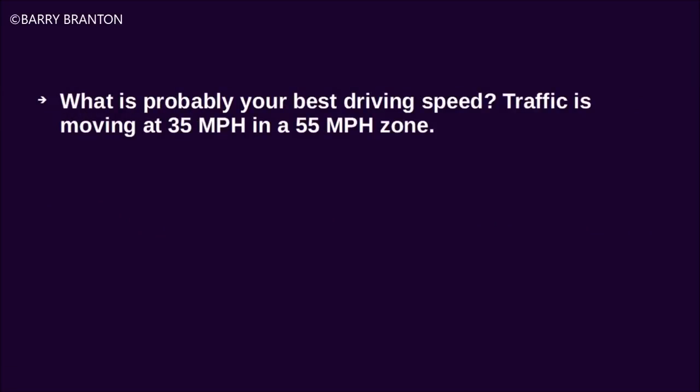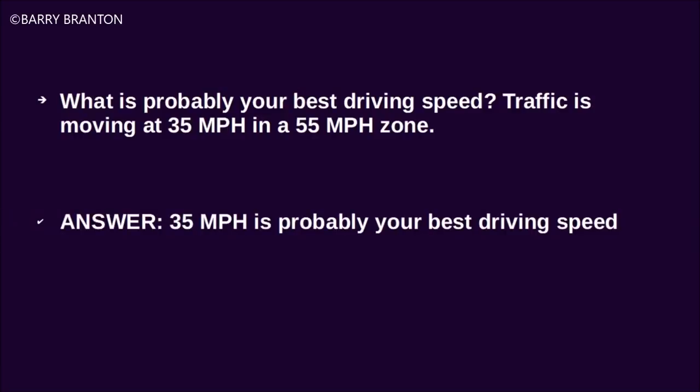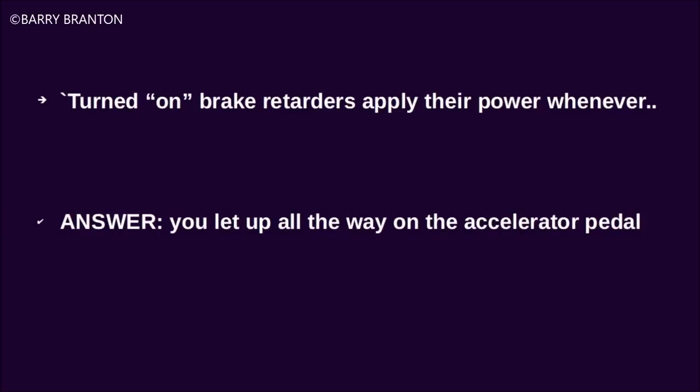What is probably your best driving speed when traffic is moving at 35 miles per hour in a 55 mile per hour zone? 35 miles per hour is probably your best driving speed. When turned on, brake retarders apply their power whenever you let up all the way on the accelerator pedal.